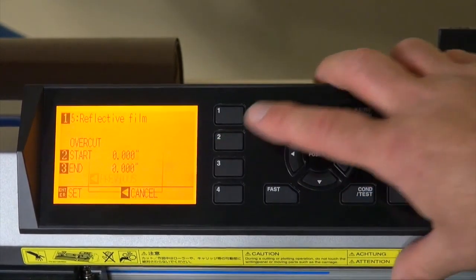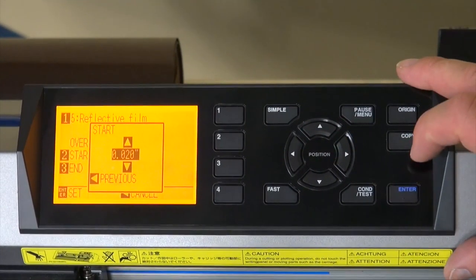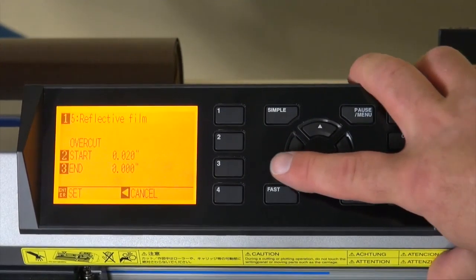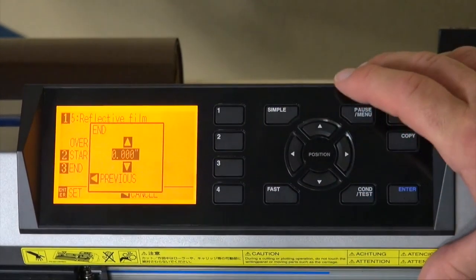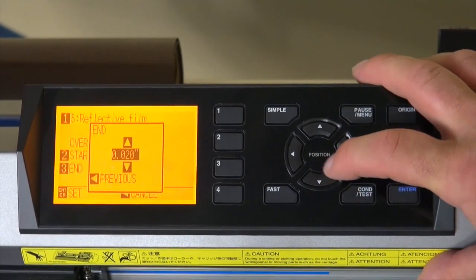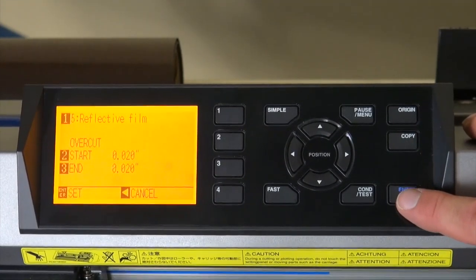So for instance, for Start we'll set that to .020. Hit your left arrow and for End we'll set that to .020 as well. Hit your left arrow and then Enter to Set.